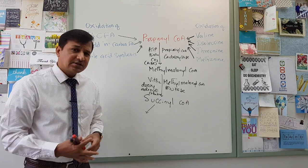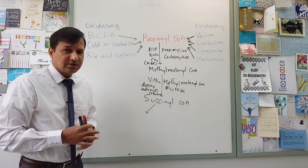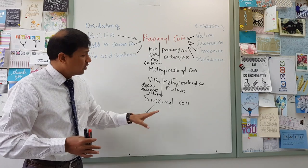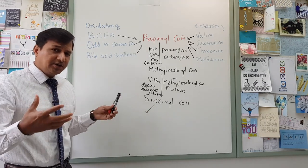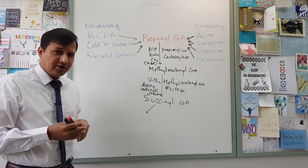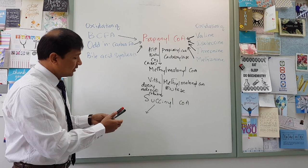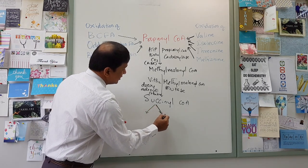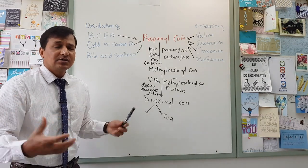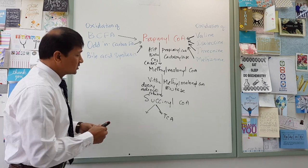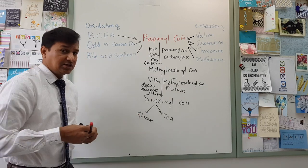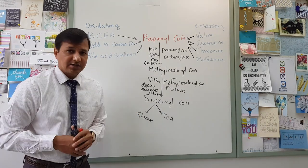What if the cell does not want to synthesize glucose? What if the liver does not need to make glucose, or these reactions are going on in other tissues? In that case, succinyl-CoA is simply a TCA cycle intermediate — it enters the TCA cycle and gives the cell a certain number of ATPs. So succinyl-CoA can either go into glucose formation or simply get into the TCA cycle and be completely oxidized.